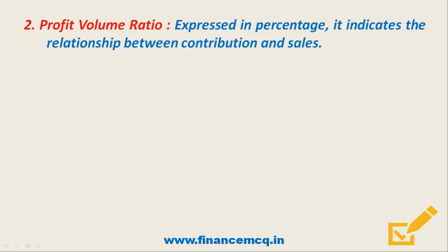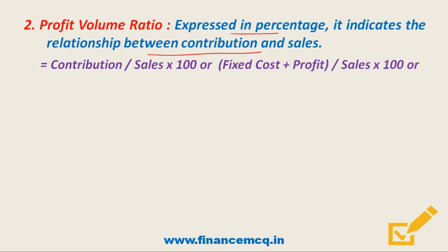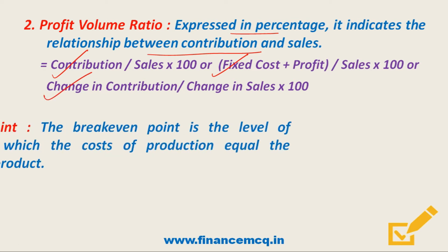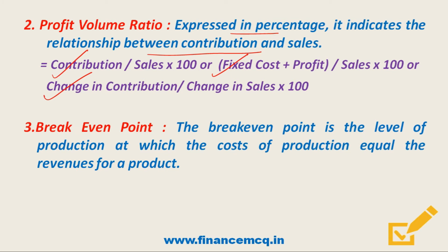The next tool is the Profit Volume Ratio (PVR). PVR is expressed as a percentage and indicates the relationship between contribution and sales. The formula for PVR is: Contribution divided by Sales, multiplied by 100; or Fixed Cost plus Profit divided by Sales, multiplied by 100; or Change in Contribution divided by Change in Sales, multiplied by 100.